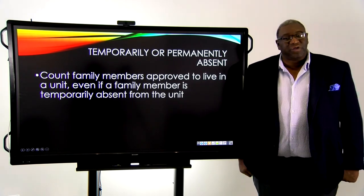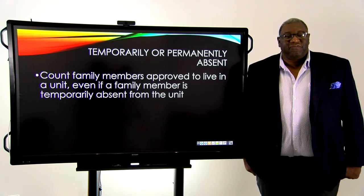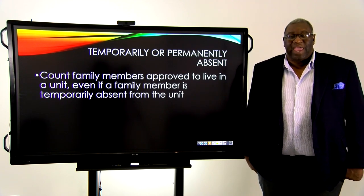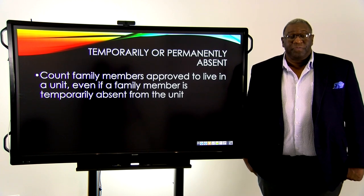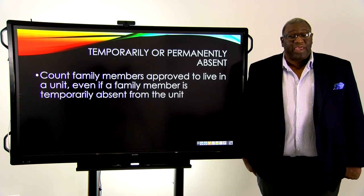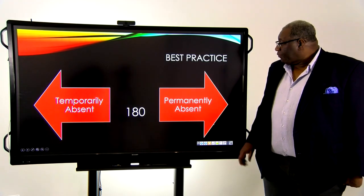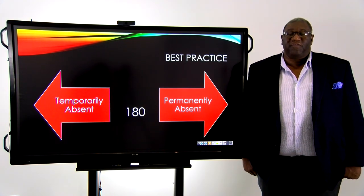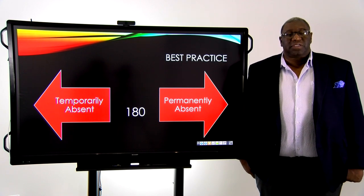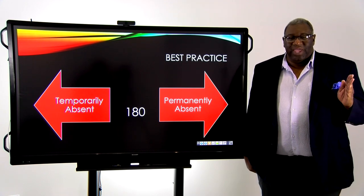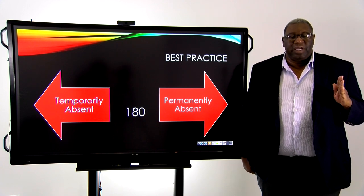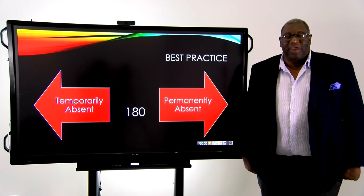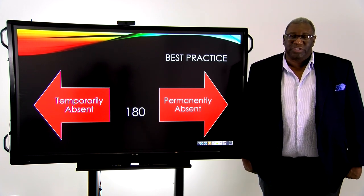What you're going to have to determine is whether that absent family member is temporarily absent or permanently absent. If they're temporarily absent, we count them in the family, but if they're permanently absent, we no longer count them. There is no cutoff or real definition provided by HUD, but a best practice is 180 days. If someone is absent up to 180 days, they're considered temporarily absent; after 180 days, they're considered permanently absent.